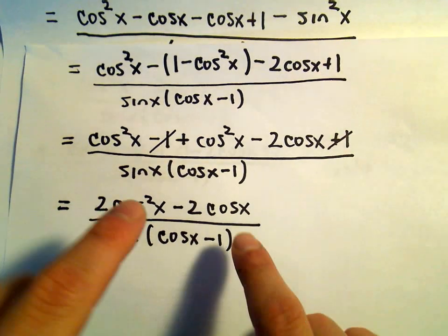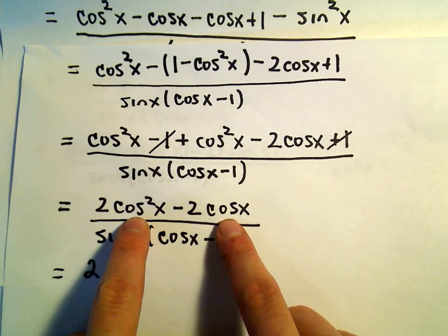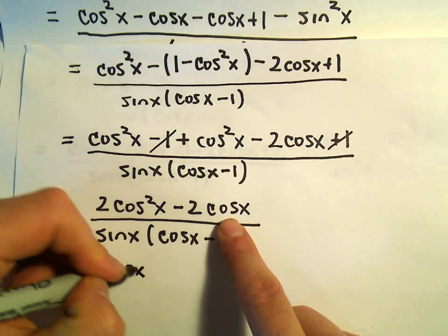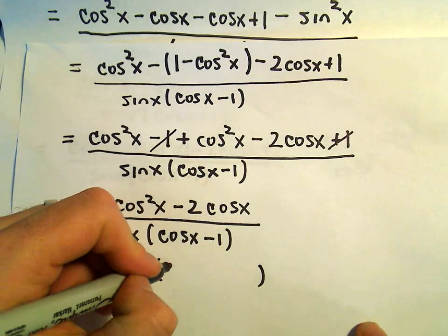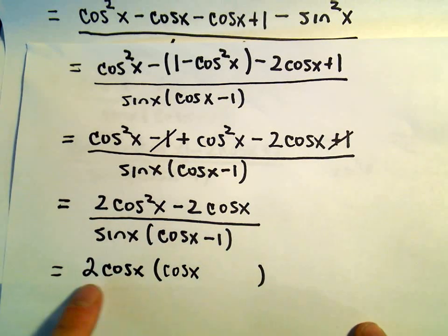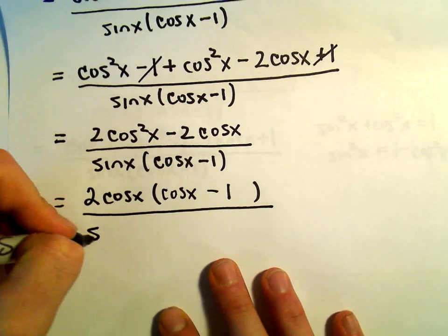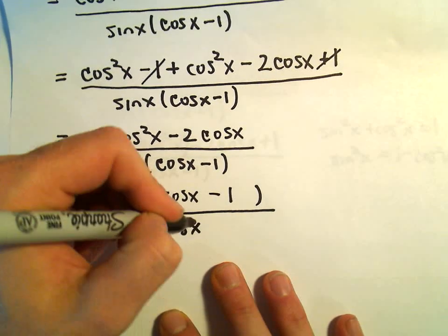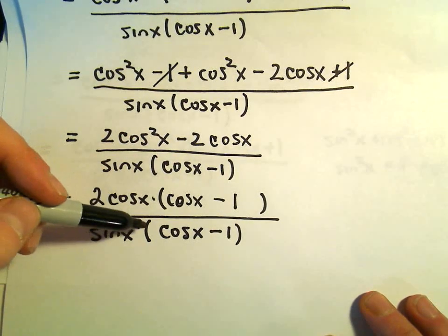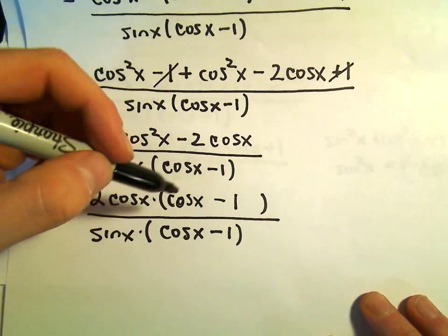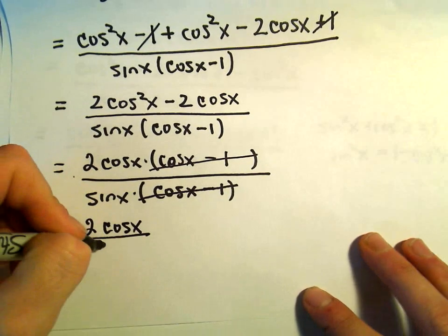There's a little more we can do here. In the numerator we can factor: pull out the 2 and a cosine x. We have 2 cosine x times cosine x giving us 2 cosine squared x, and 2 cosine x times negative 1 giving us negative 2 cosine x. The denominator is sine x times cosine x minus 1. Lo and behold — we now have a cosine x minus 1 factor in the numerator and a cosine x minus 1 factor in the denominator. We can simply cancel those, leaving us with 2 cosine x over sine x.